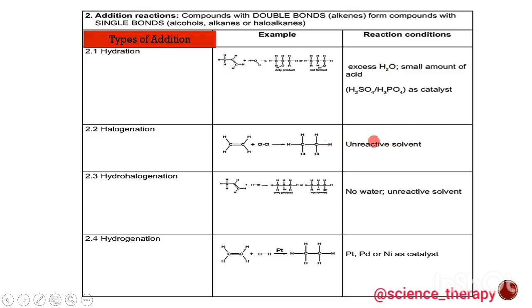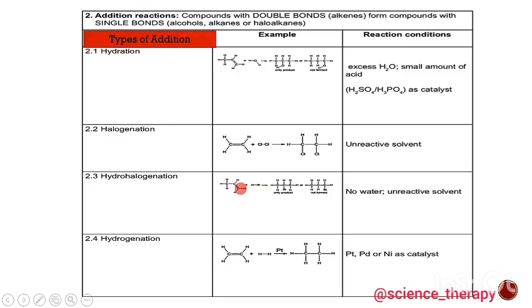The reaction condition for addition halogenation is an unreactive solvent. The third type of addition reaction is hydrohalogenation — from the name we are adding a hydrogen and a halogen. We have an alkene reacting with hydrogen bromide. Using Markovnikov's rule, the bromine bonds to the carbon with the least number of hydrogens, and the hydrogen bonds to the carbon with more hydrogens. The product formed is 2-bromopropane.